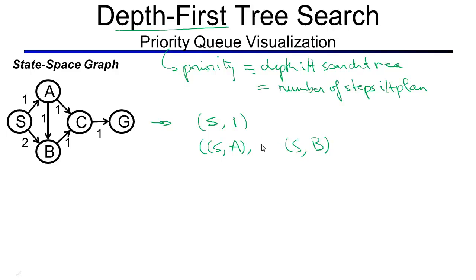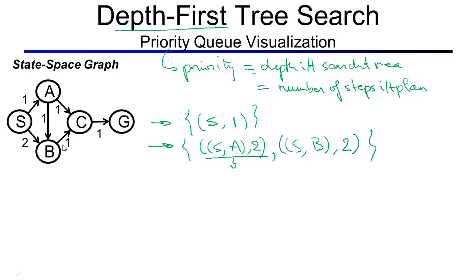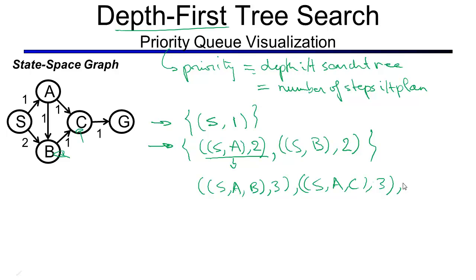For S→A the priority level is 2, and for S→B the priority level is also 2. Alphabetical tie-breaking means we expand S→A first. A has two successors B and C, so we add S, A, B with a priority of 3, and S, A, C with a priority of 3, and we retain S, B with a priority of 2.